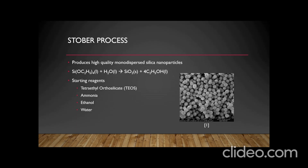The Stober process produces high-quality monodispersed silica nanoparticles with diameters ranging from 20 nanometers to 200 nanometers. It is used for the preparation of silica colloids by the hydrolysis of alkyl silicates and subsequent condensation of silicic acid and ethanol using ammonia as the catalyst. The starting reagents are tetraethyl orthosilicate (TEOS), ammonia, ethanol, and water.